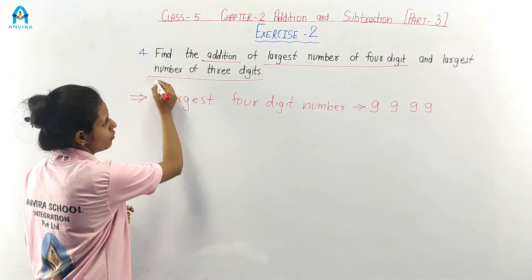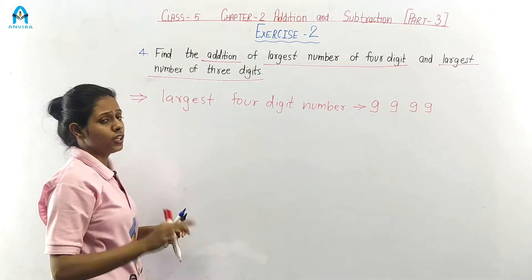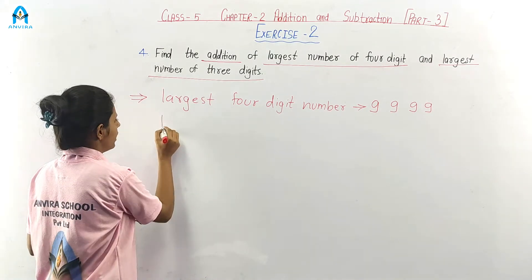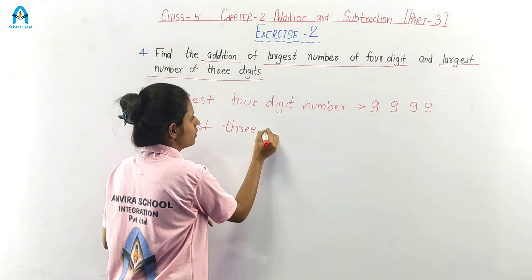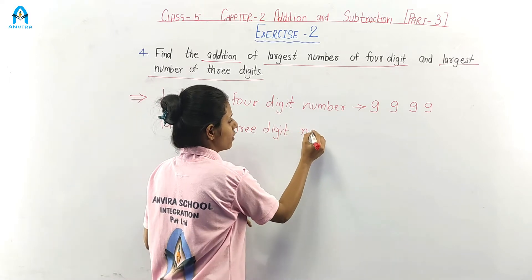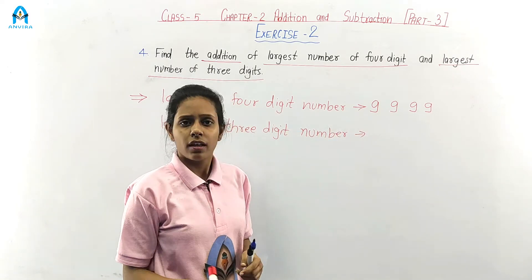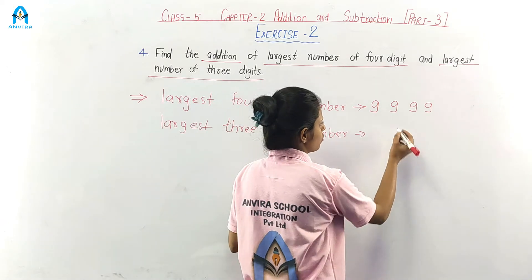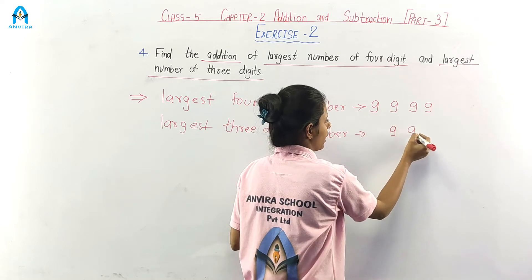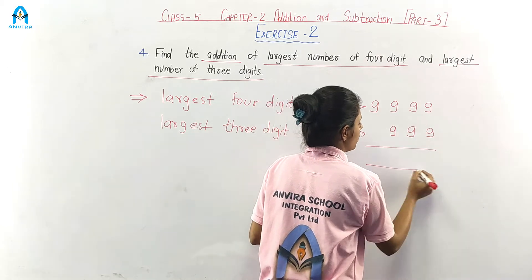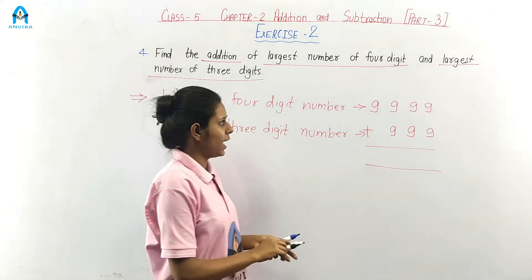Next we want the largest 3-digit number. The largest 3-digit number is 999 — 9 on the hundreds place, 9 on the tens, and 9 on the ones. Now what we have to do? We have to add. So let's add.